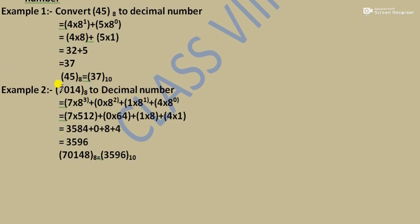For 7014 octal: 7 × 8³ + 0 × 8² + 1 × 8¹ + 4 × 8⁰. Assigning exponents from right to left — the rightmost digit gets exponent 0, then 1, then 2, then 3. So: 7 × 512, then 0 × 64, then 1 × 8, then 4 × 1. Now we will multiply each term.